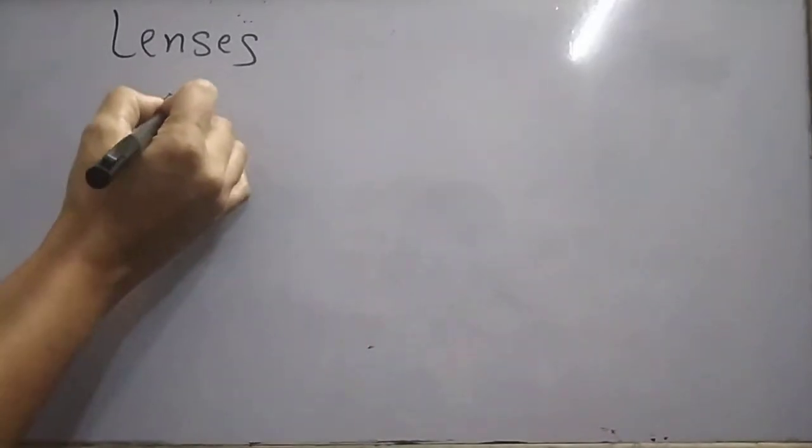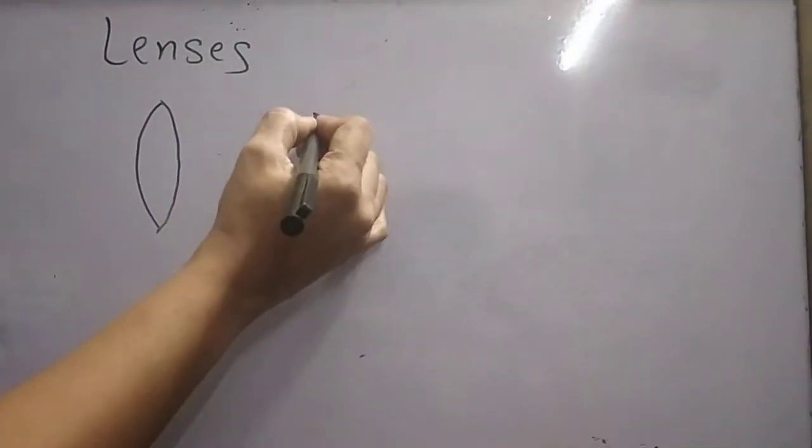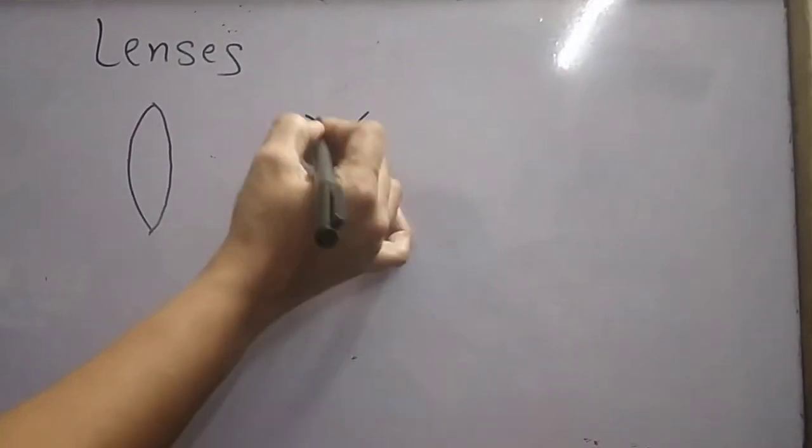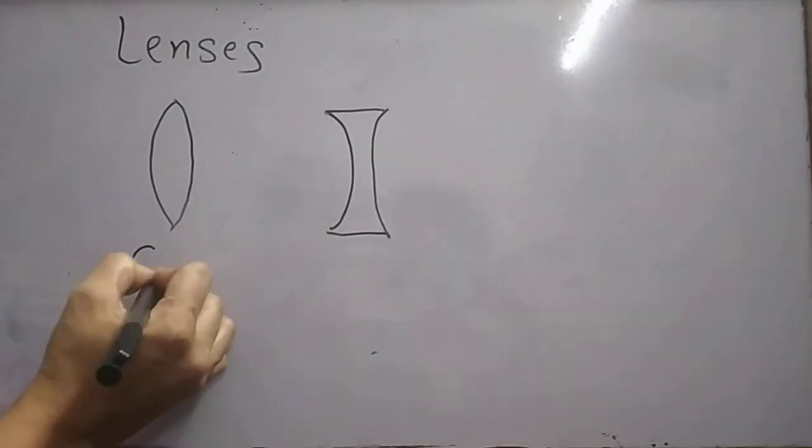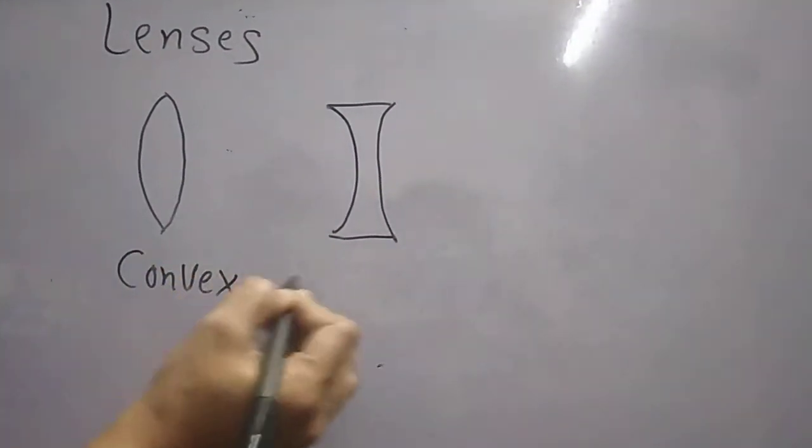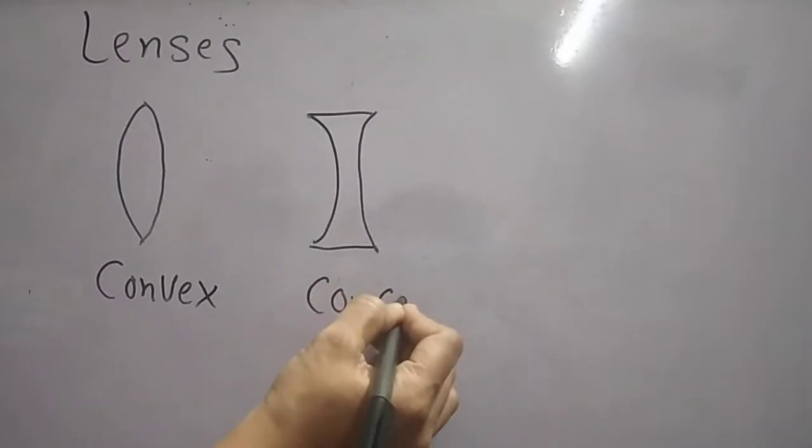Today we are going to study lenses. This is a convex lens and this is a concave lens. We are going to study the terms: center of curvature, radius of curvature, principal axis, optical center, and principal focus. These terms are used to draw the ray diagram of lenses.